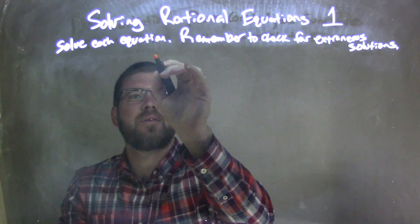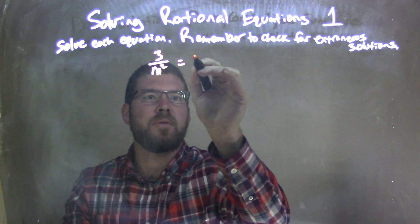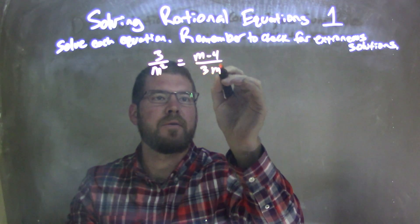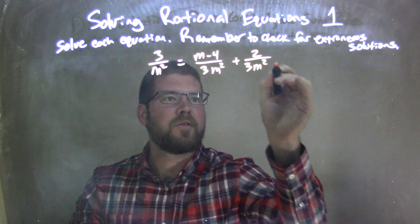So if I was given this equation: 3 over m squared equals m minus 4 over 3m squared plus 2 over 3m squared.